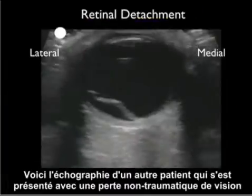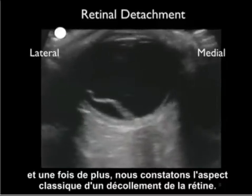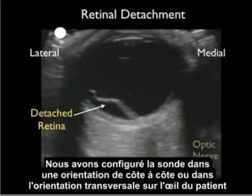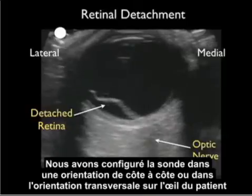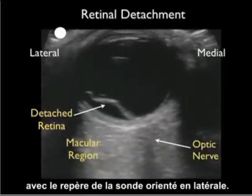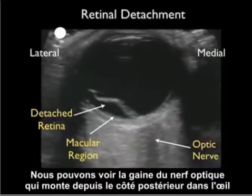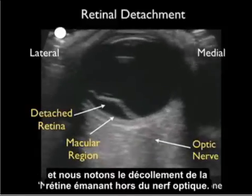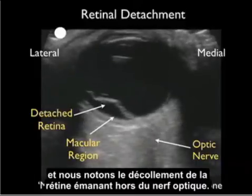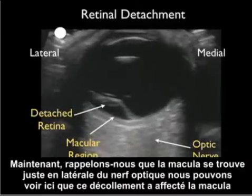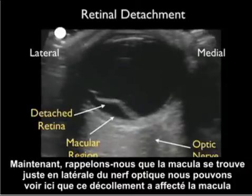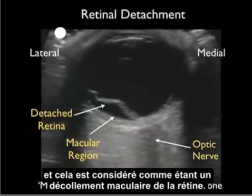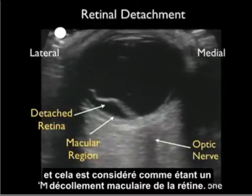Here's the ultrasound from another patient who presented with non-traumatic loss of vision, again showing the classic appearance of a retinal detachment. The probe is in a transverse orientation over the patient's eye with the probe marker oriented lateral. We can see the optic nerve sheath coming up from the posterior aspect, with the detached retina emanating off from the optic nerve. Recalling that the macula lies just lateral to the optic nerve, this detachment has affected the macula — classified as a mac-off or macular-off retinal detachment.